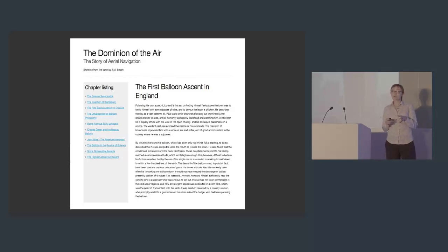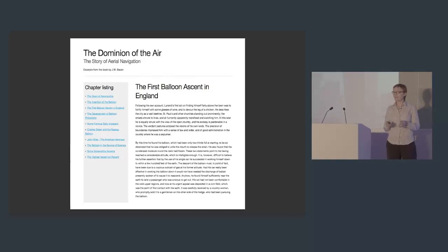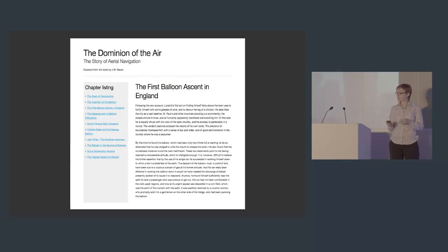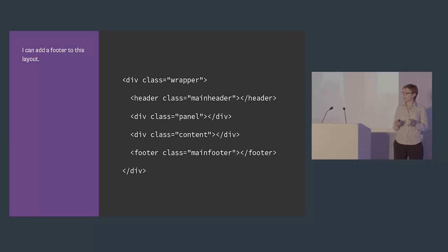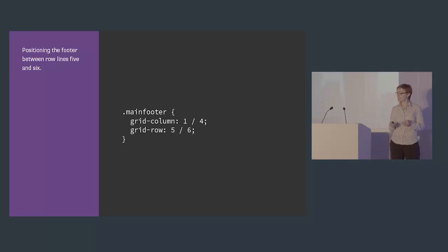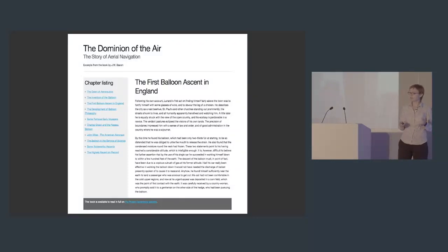The panel has a gray background that takes full height, because both the panel and the main content know about each other — they're in the same row, so the panel background extends right down. This is the ability for one item to react to another that we've been missing in all layout methods until Flexbox and Grid. If we wanted to add a footer, we add it to the markup and position it from column line one to line four between row lines five and six. No clearing is required because it's in its own row — it can't jump up and overlap anything.